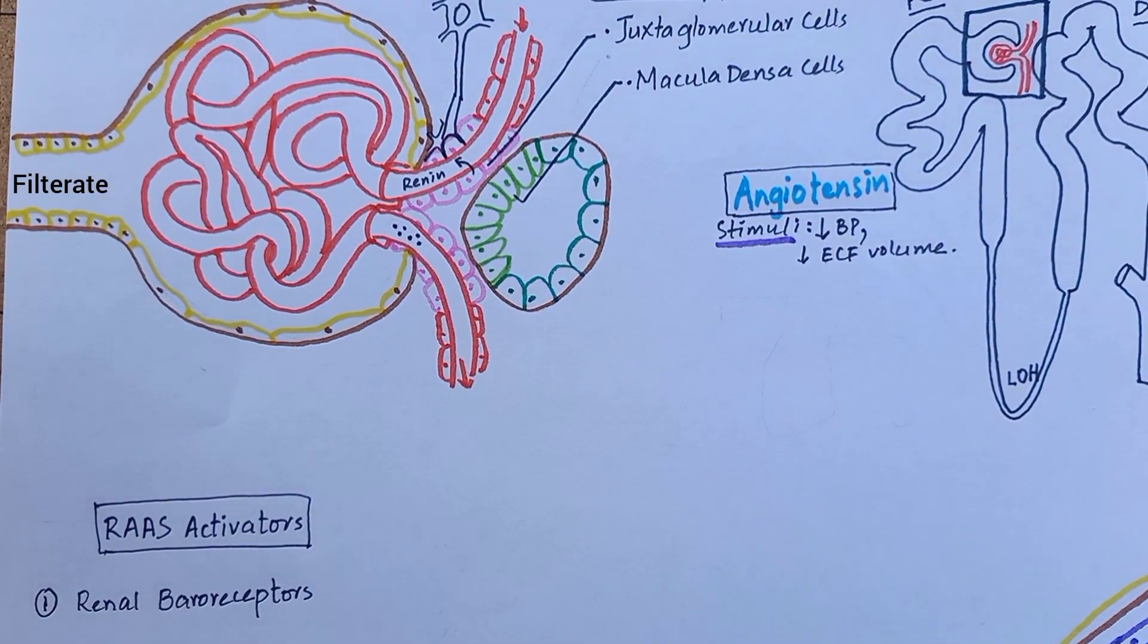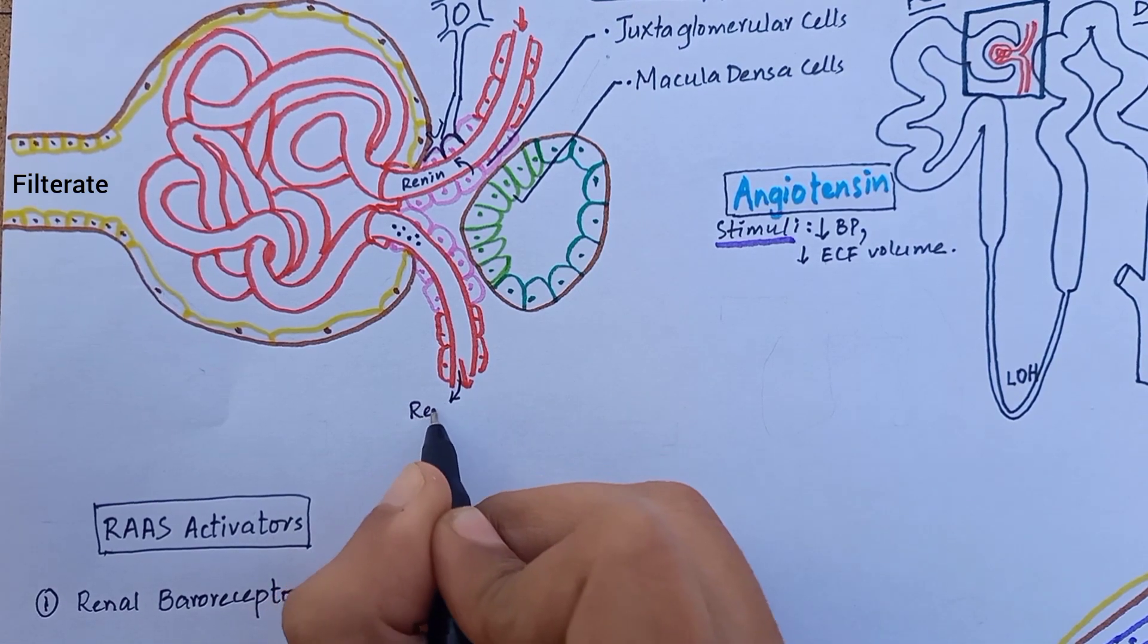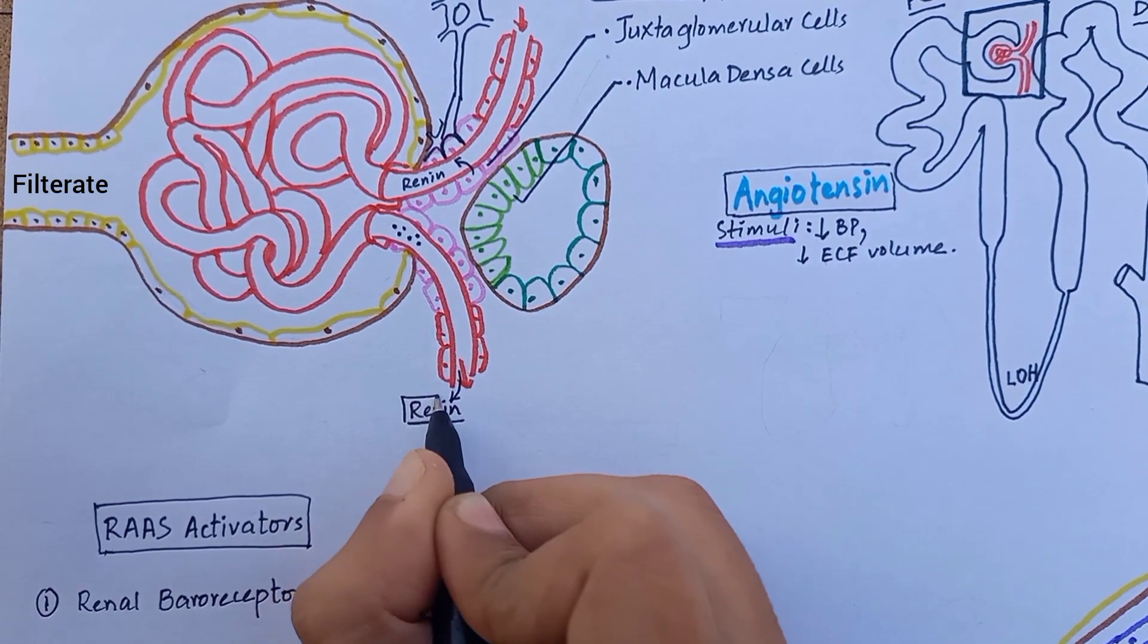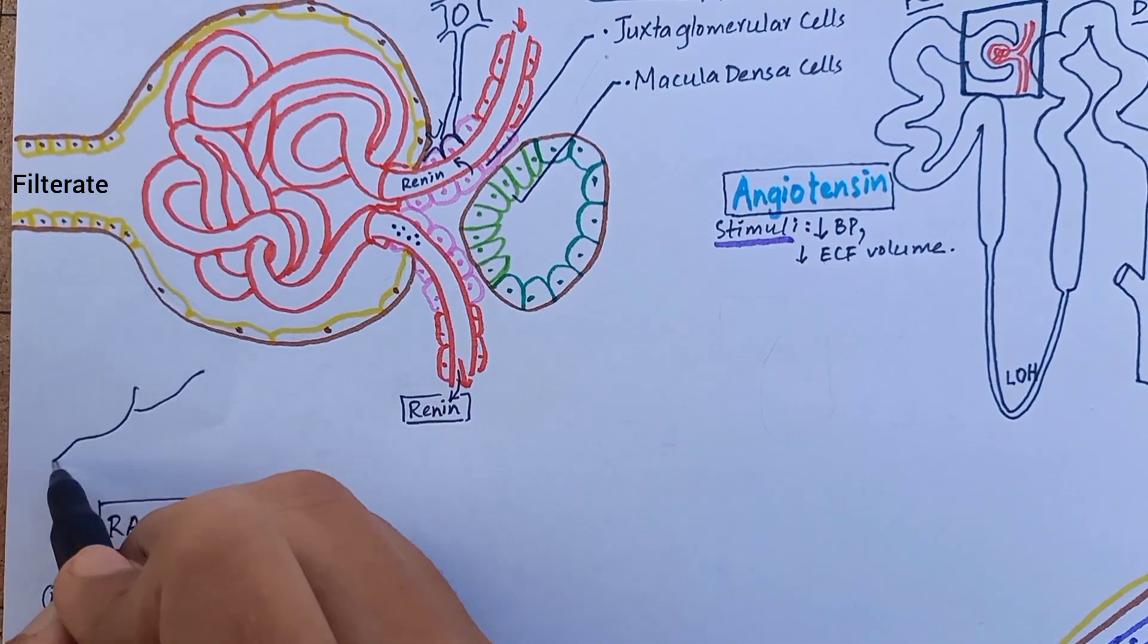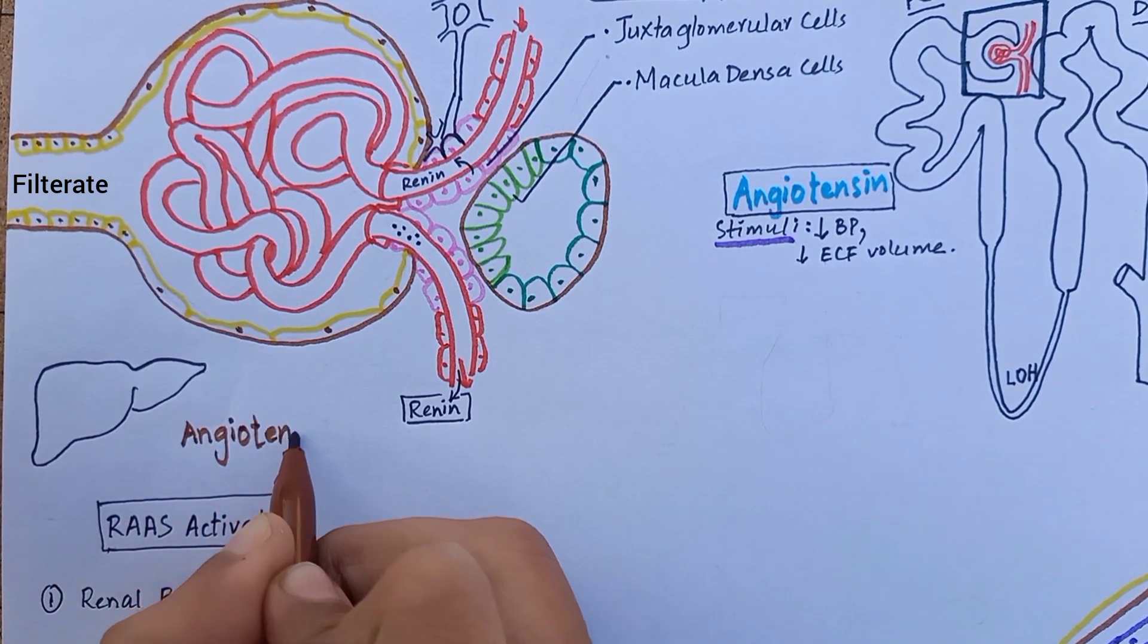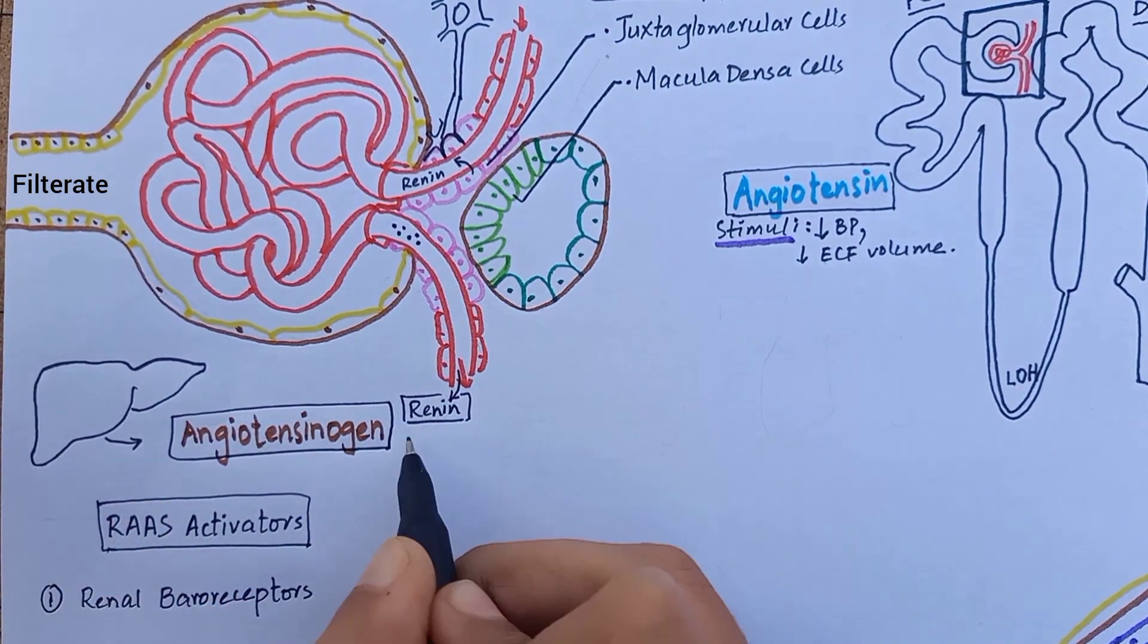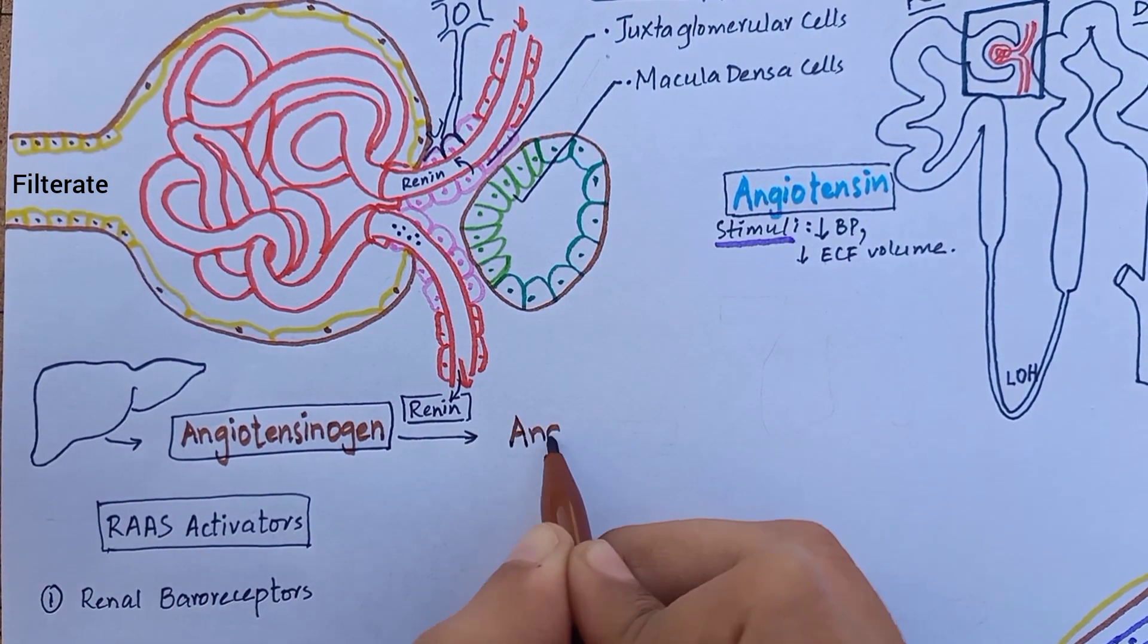Renin released from these cells is not filtered. It enters renal blood and passes out of the kidney into circulation. There is a plasma protein produced by liver called angiotensinogen. Renin acts enzymatically on angiotensinogen to form angiotensin 1.